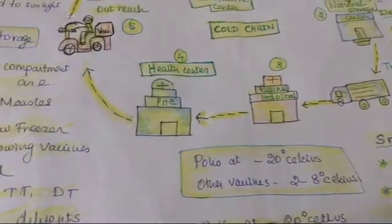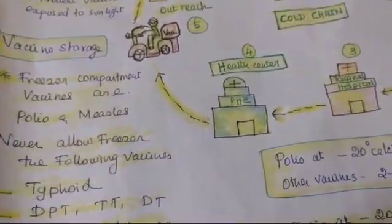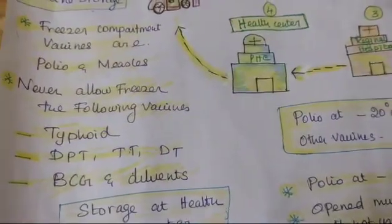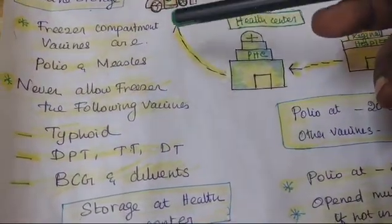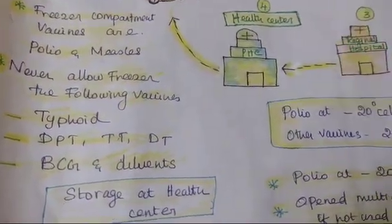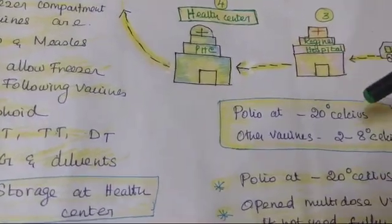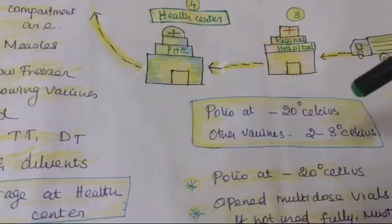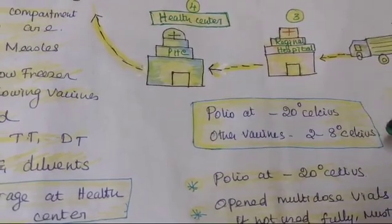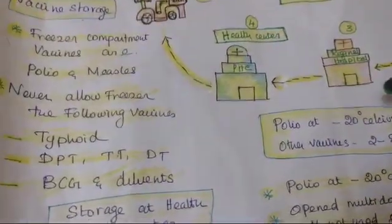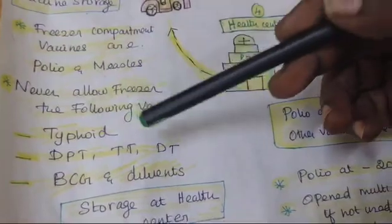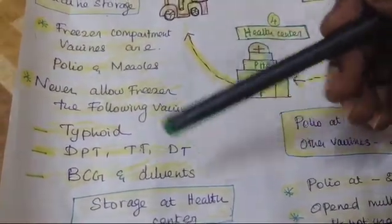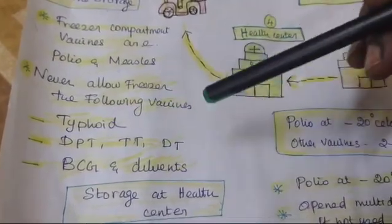The vaccine storage system has different compartments. It also has a freezer compartment. Vaccines mainly kept there are polio and measles. Polio vaccines should always be kept at minus 20 degrees Celsius. Other vaccines can be kept at 2 to 8 degrees Celsius. Never allow some vaccines into the freezer compartment — specifically TT, DPT, DT, adult DT, BCG, and other diluents.